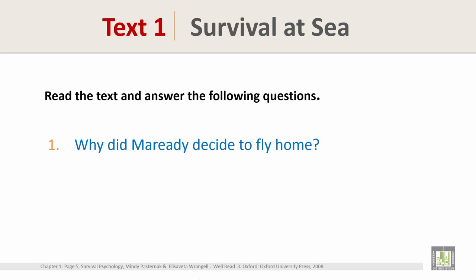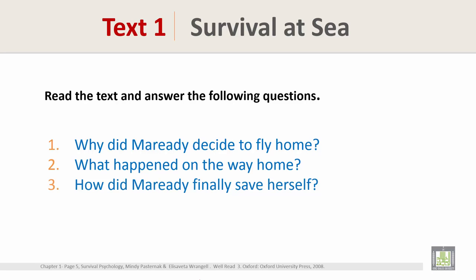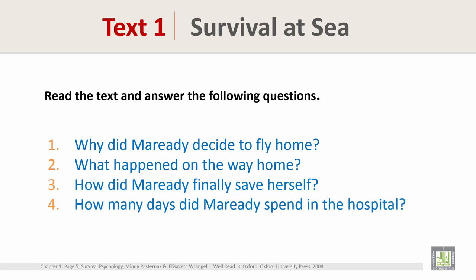Now read the text and answer the following questions: Number 1, why did Meredith decide to fly home? Number 2, what happened on the way home? Number 3, how did Meredith finally save herself? Number 4, how many days did Meredith spend in the hospital? To answer all these questions, you don't need to read the whole text. Just read the first paragraph, the first sentence of each paragraph, and the last sentence of the text.